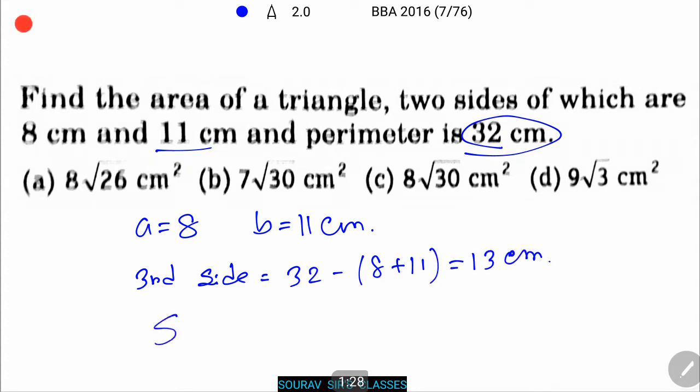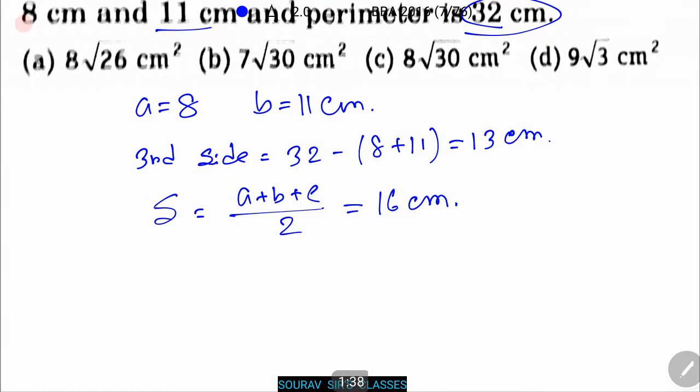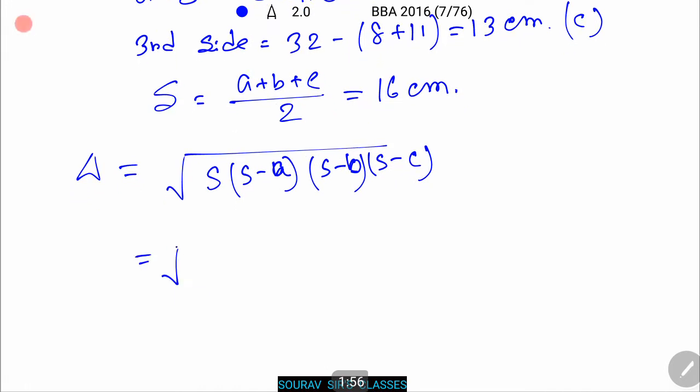So s equals a plus b plus c by 2, that equals 16 centimeter. Therefore, the area of the triangle equals root over s into s minus a, s minus b, and s minus c. That equals root over 16 into 8 into 5 into 3, that equals 8 root 30 centimeter square. Next problem.